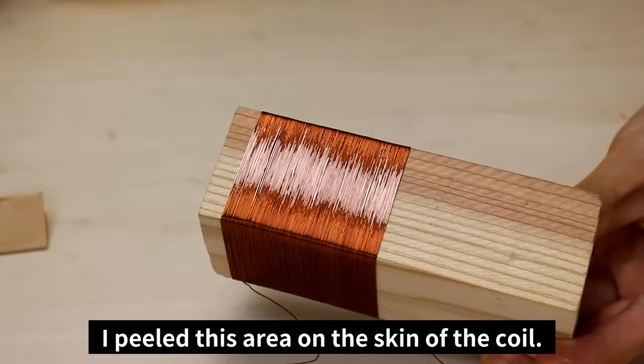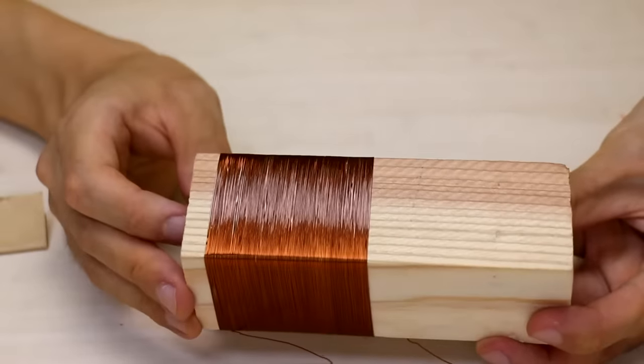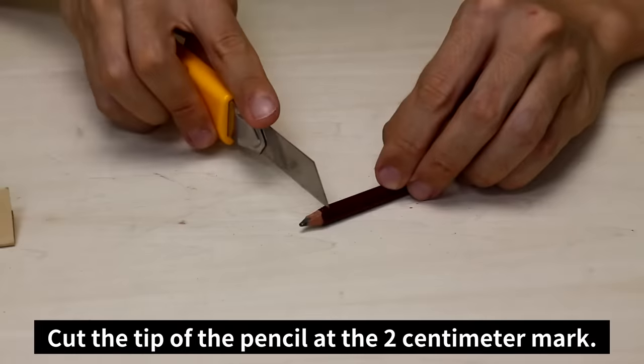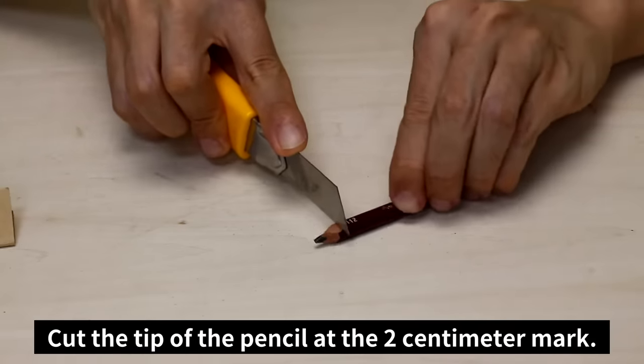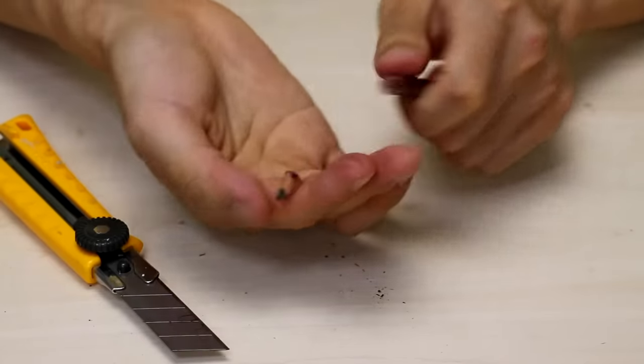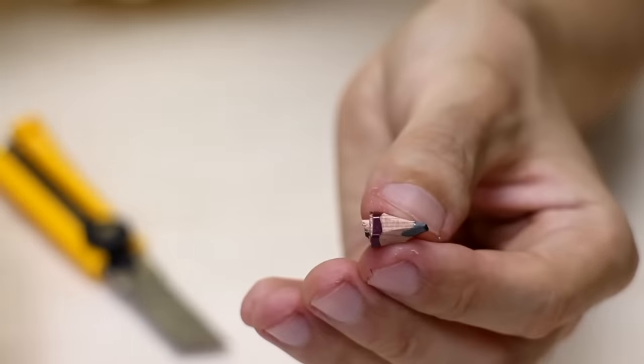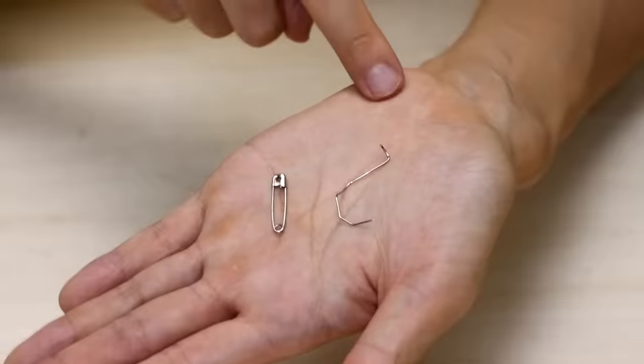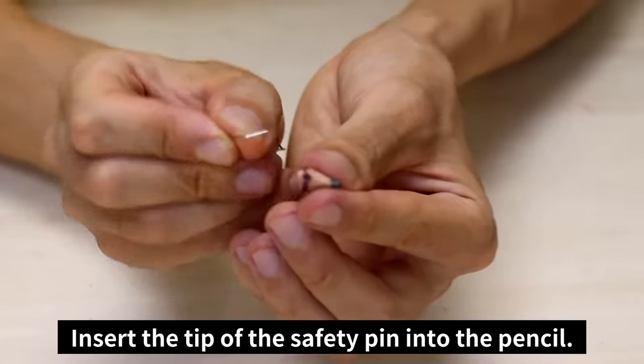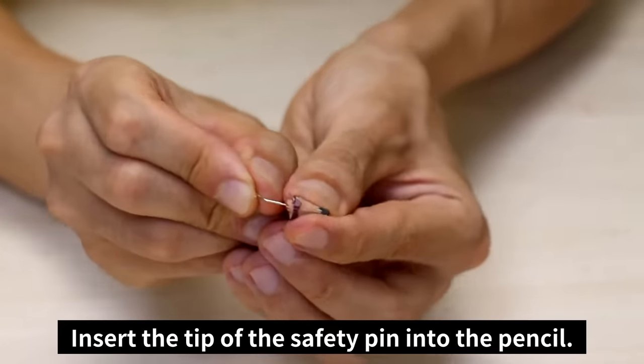I peeled this area on the skin of the coil. Cut the tip of the pencil at the 2 cm mark. Next, break apart the safety pin like this. Insert the tip of the safety pin into the pencil.